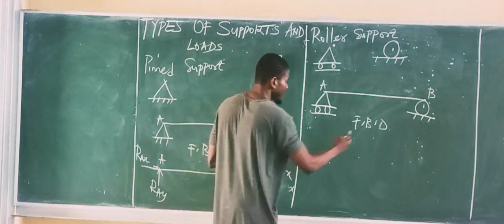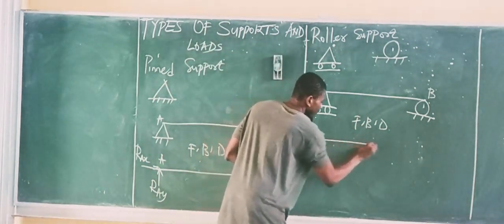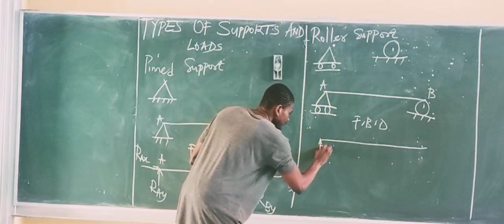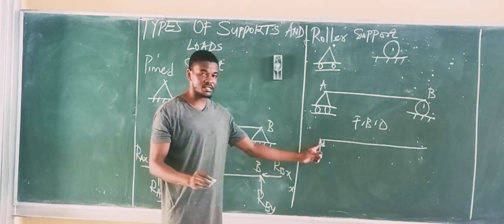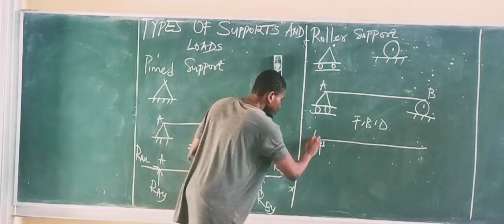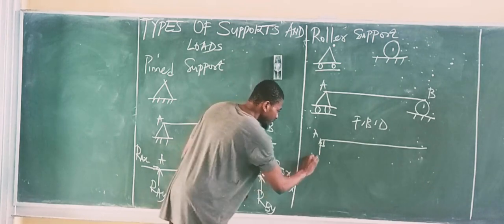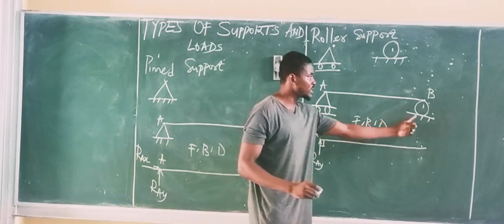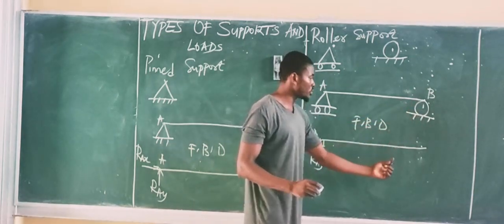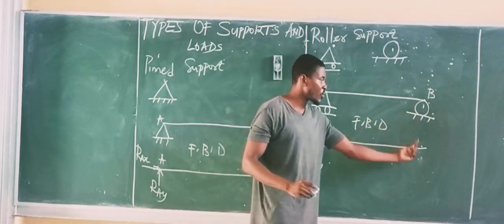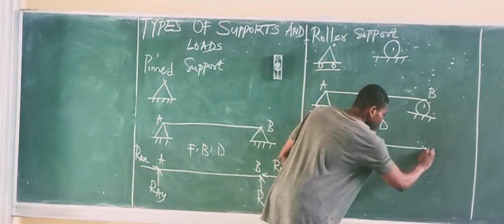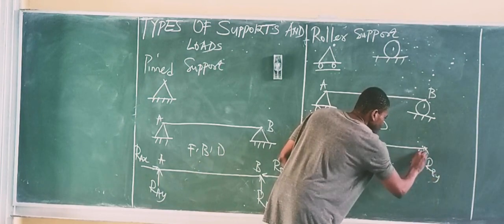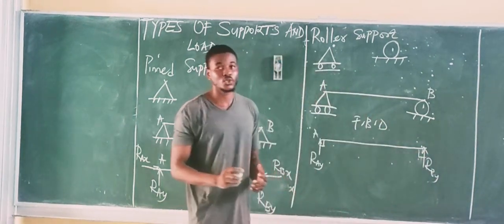To draw the free-body diagram, in place of this roller I will have just one reaction at 90 degrees to the surface. Since this reaction is vertical, we can call this R-A-Y. Similarly, at point B we also have one reaction normal to the surface, simply R-B-Y, which must always be at 90 degrees to the surface.